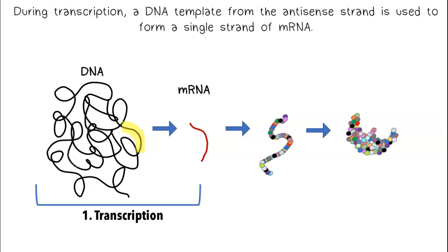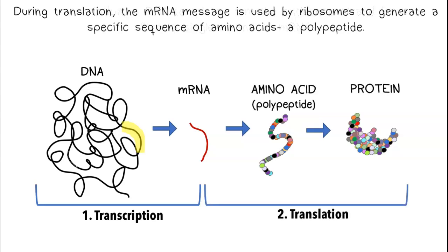During transcription, a DNA template from the antisense strand is used to form a single strand of mRNA. During translation, the mRNA message is used by ribosomes to generate a specific sequence of amino acids, a polypeptide.